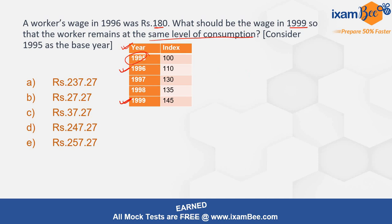What are we going to do first? Let's find out what is the worker's real income, because that is only going to tell you that he is at the same level of consumption. It's the real income, not the money income, because you have to adjust his income with the price index.